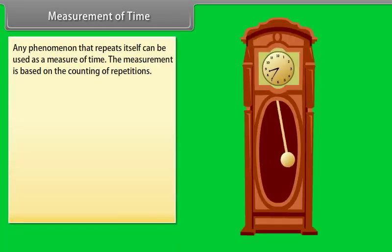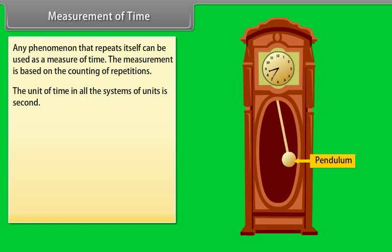Measurement of time: Any phenomenon that repeats itself can be used as a measure of time. The measurement is based on the counting of repetitions. The unit of time in all systems of units is second. Some techniques to measure time intervals are given as follows.